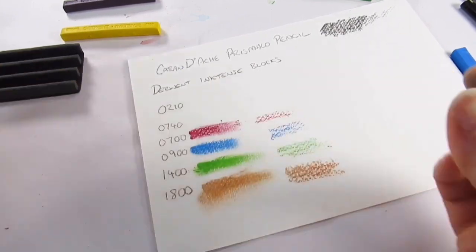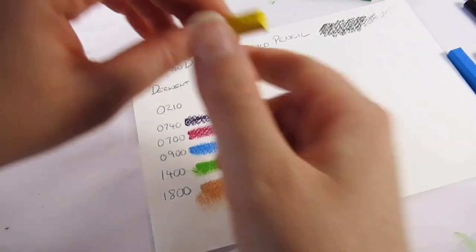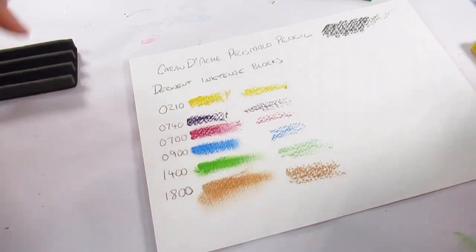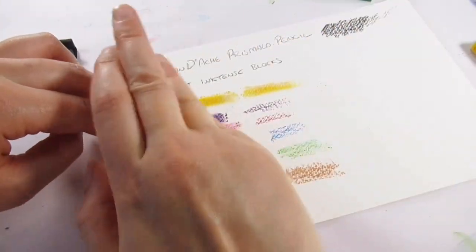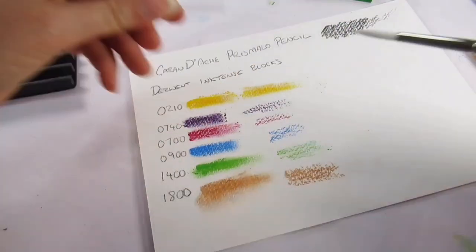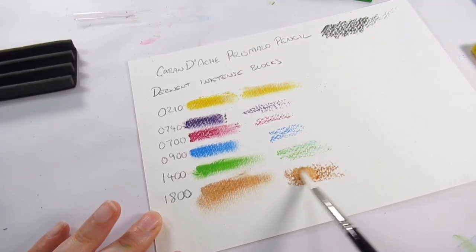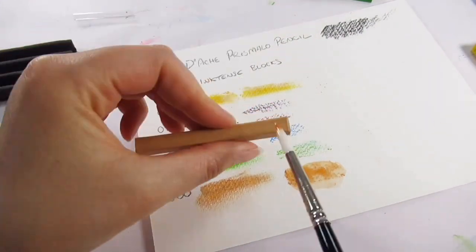They're exactly what I expected from the Inktense range, really vibrant color there. I thought I'd try and blend them a little bit with my finger to see if that could be possible and it is to a certain extent, but these are either to be used dry or to be used with the paintbrush and water.